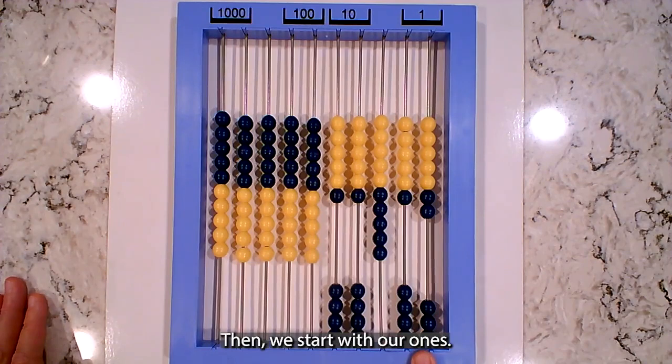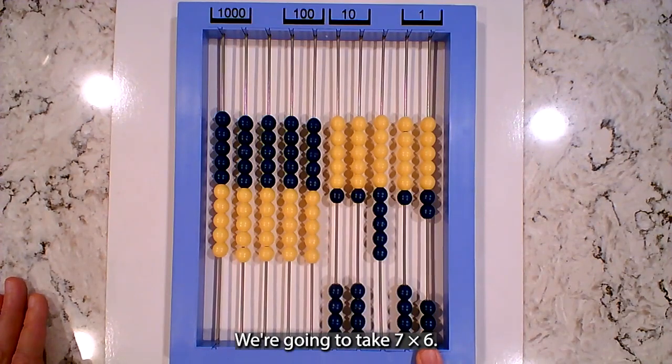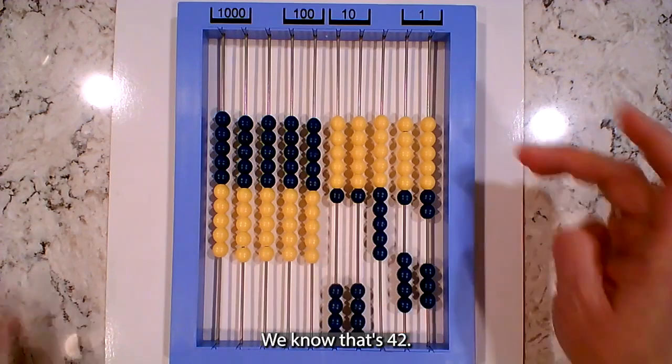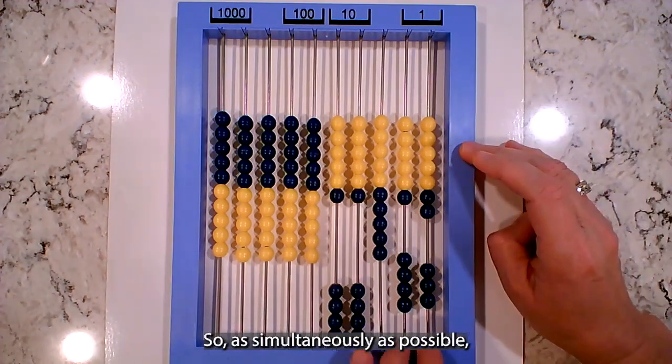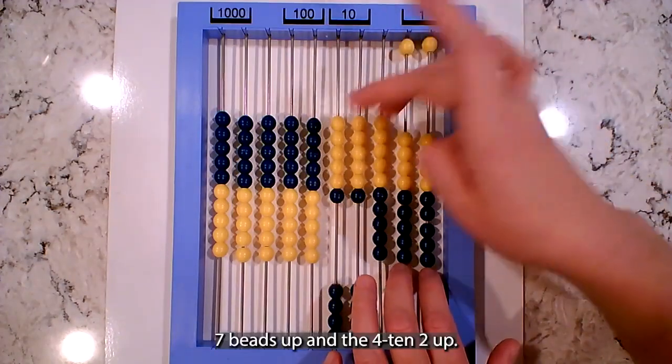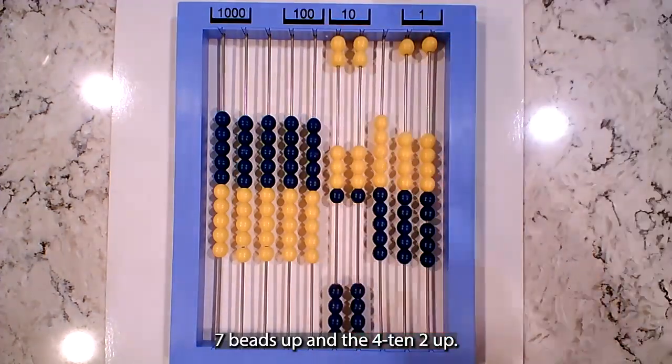Then we start with our ones. We're going to take seven ones times six. So what is seven times six? We know that's 42. So as simultaneously as possible I'm going to slide these seven beads up and the 4 tens 2 up.